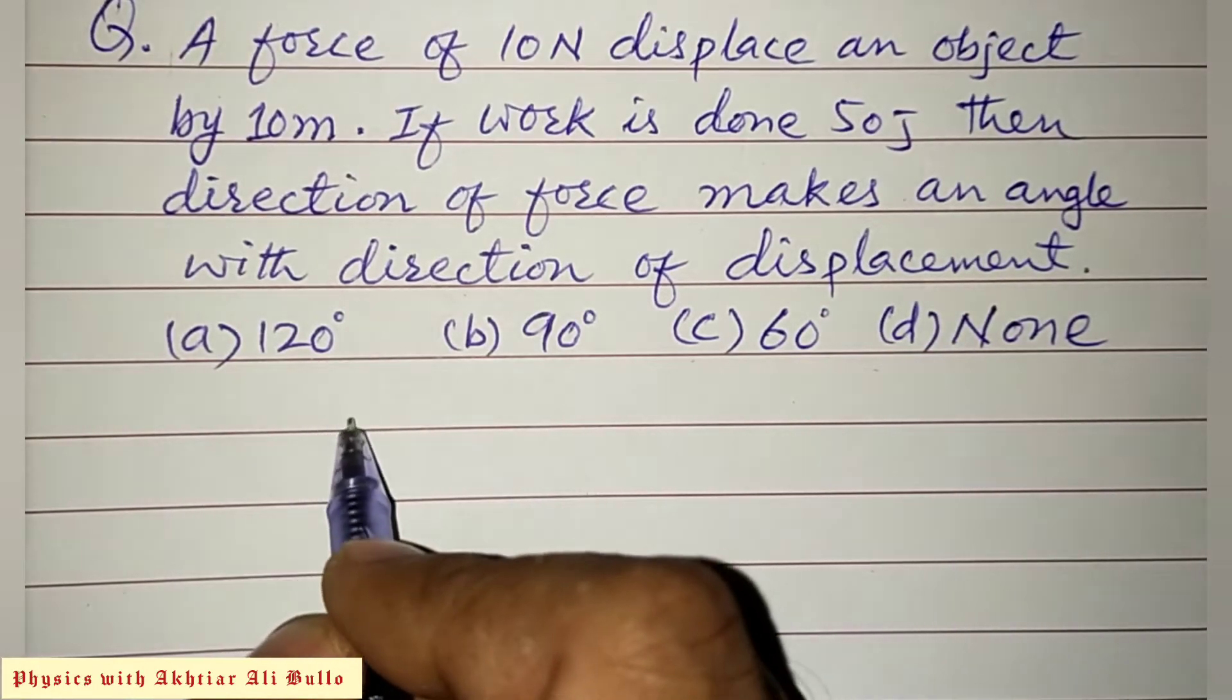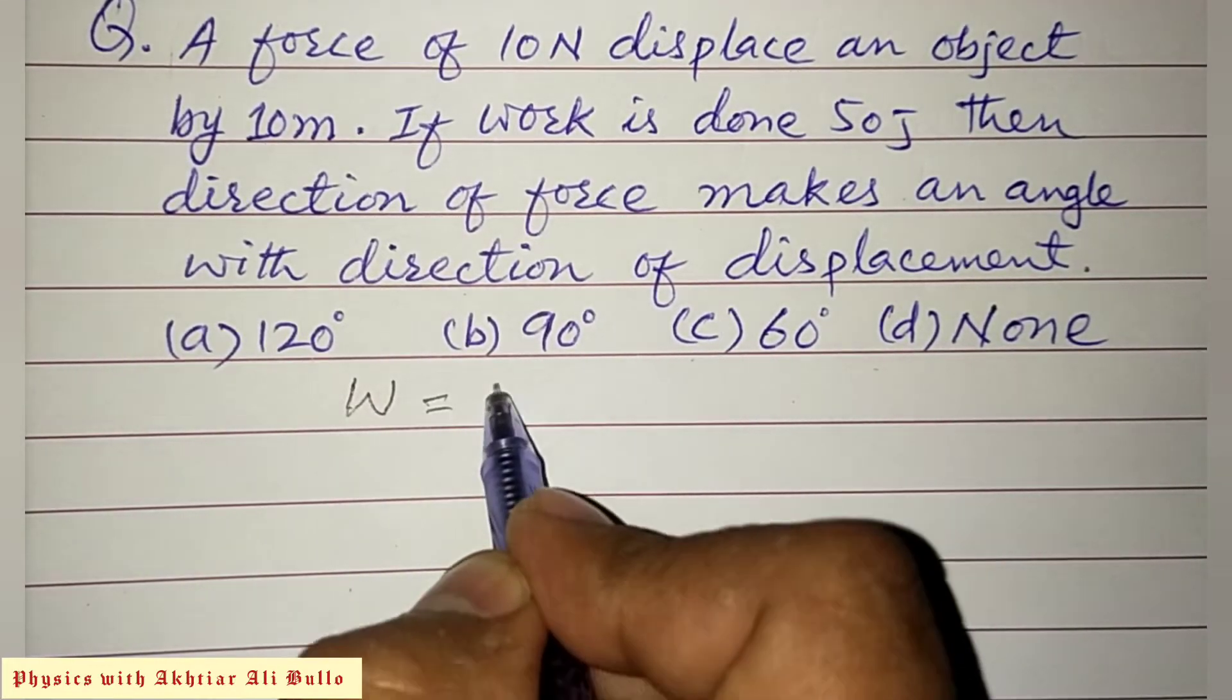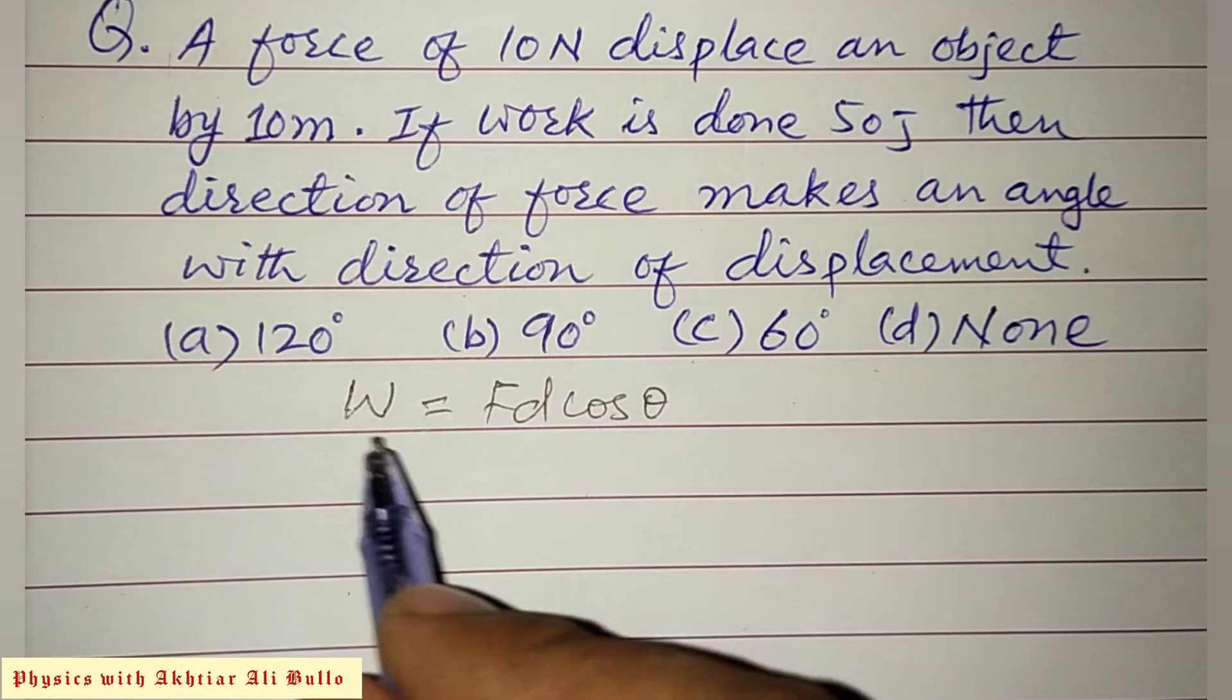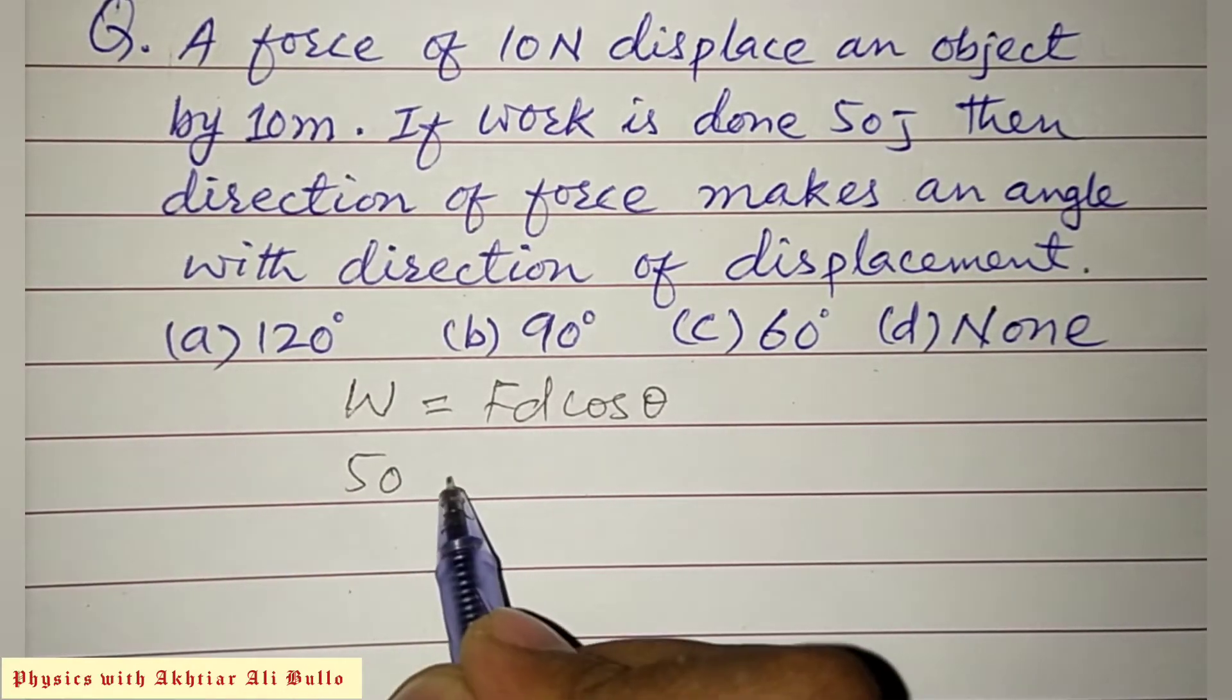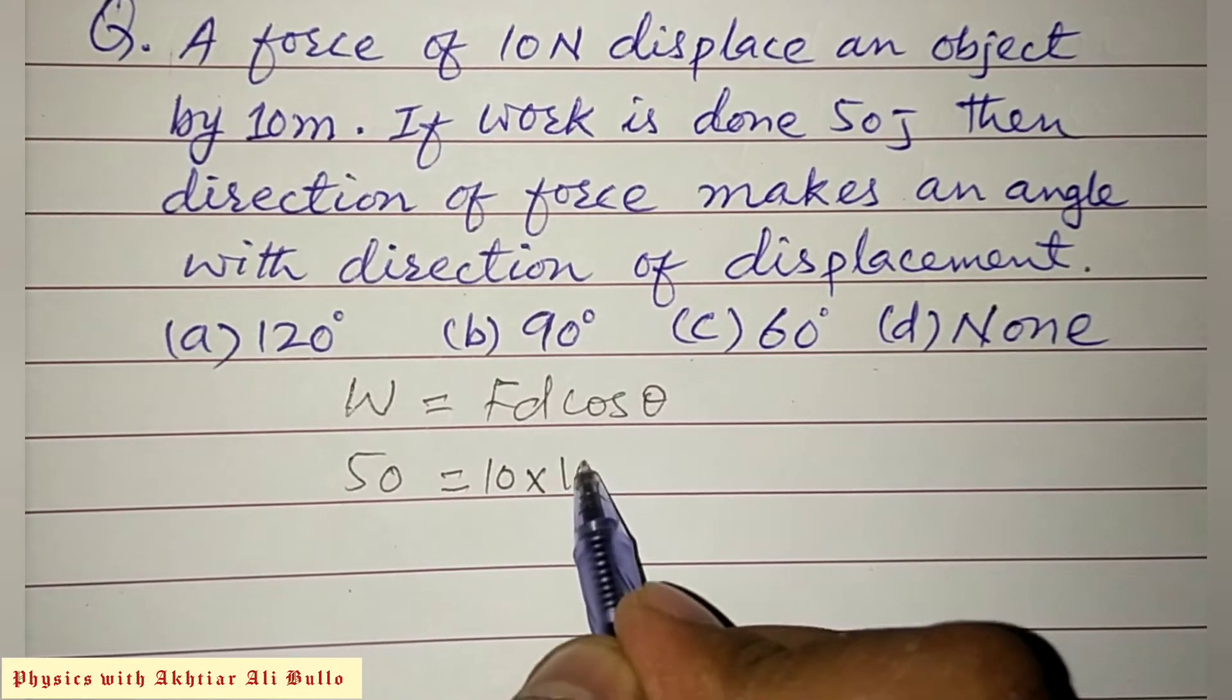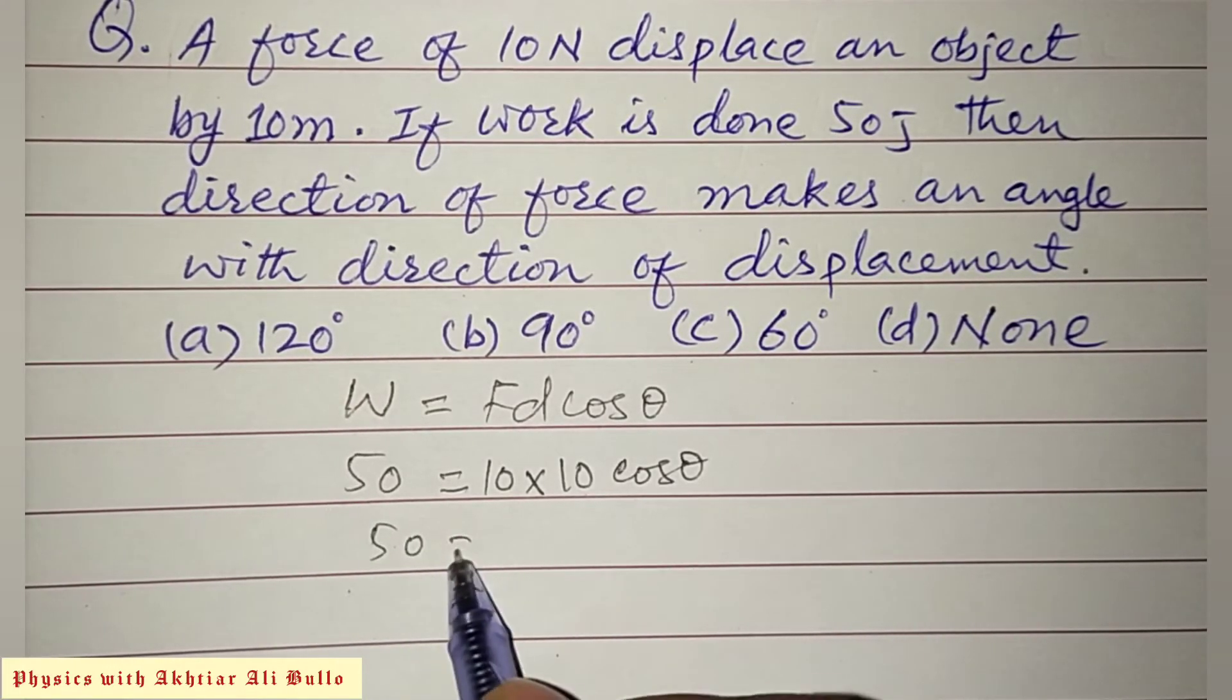To calculate work done, we will use the equation: work is equal to F D cos θ. So we have to calculate the angle. Work is 50 joules, and force is 10 Newton into displacement is 10 meters into cos θ. So 50 equals 10 into 10.